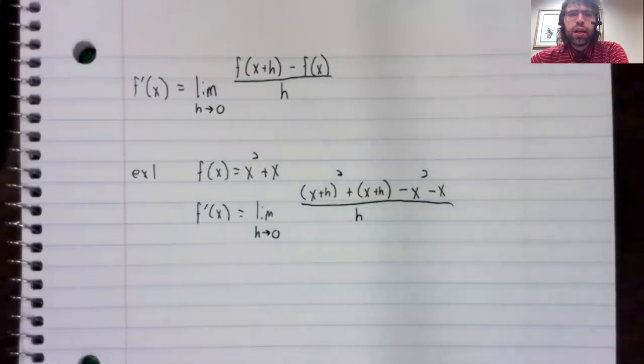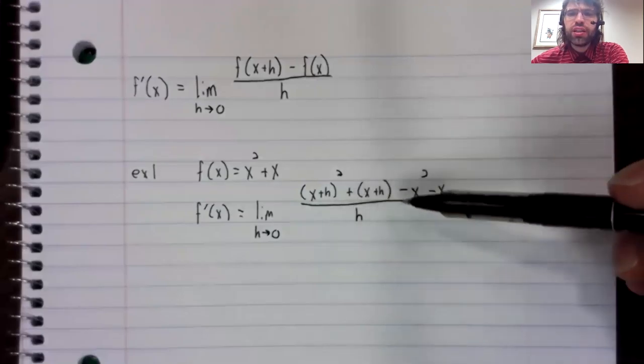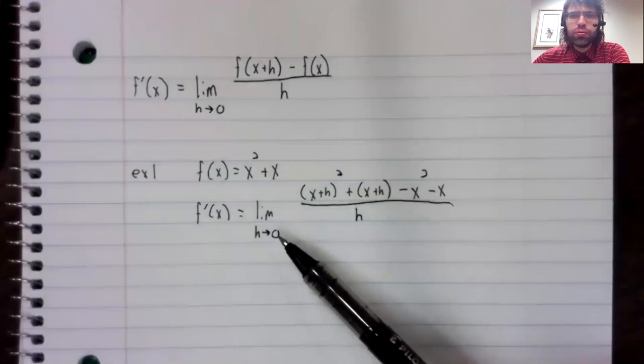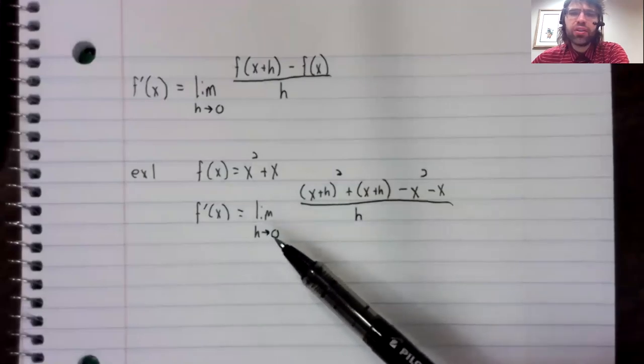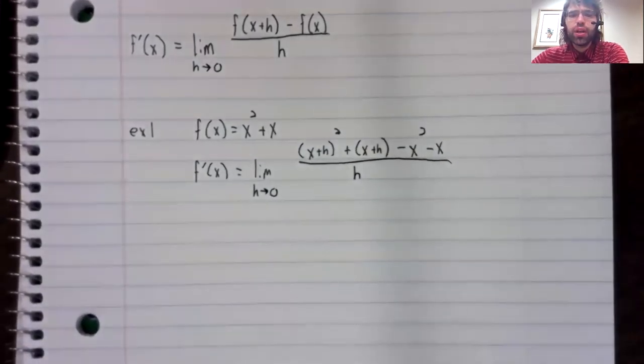And you cannot use continuity here. Everything in this fraction is continuous, but at zero, this quotient is not defined. So you can't just let h be zero. What should you do?